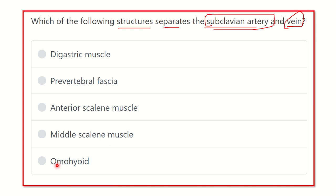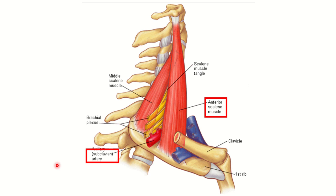Looking at the image, we can see the venous structure here, which is the subclavian vein, and this artery is the subclavian artery. Between the subclavian artery and subclavian vein there is a structure, which is the anterior scalene muscle.